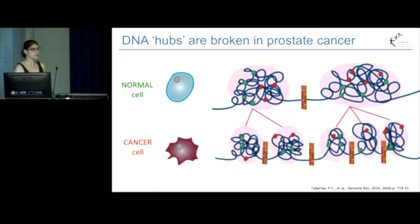But then in prostate cancer, what we find is that these actually become broken into multiples, and these multiples create new barriers. What's really interesting is that genes that change expression in prostate cancer are found at these new looping interactions.